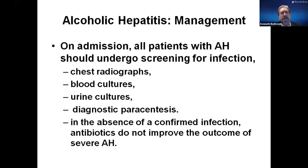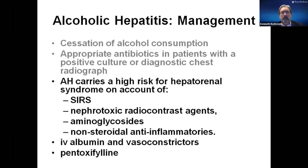All patients with alcoholic hepatitis should undergo a full screening for infection, including a chest x-ray, blood cultures, and urine culture. If they have ascites, do a diagnostic paracentesis. We don't empirically treat them with antibiotics, but we follow them very closely for the development of infection. We know these patients have a very high risk for hepatorenal syndrome, so we try to avoid aminoglycosides, contrast agents, and definitely no NSAIDs. Sometimes they'll need albumin. We don't use Pentoxifylline anymore — that's fallen out of favor.